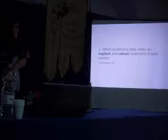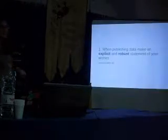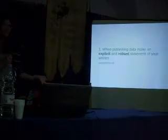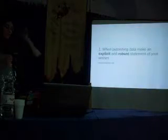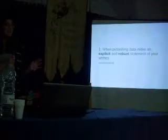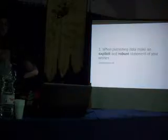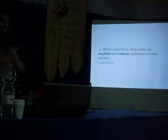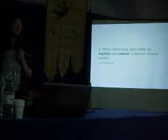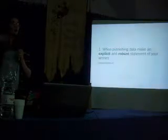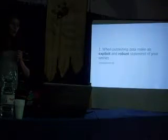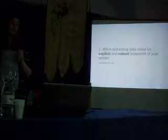Panton Principle number one: when publishing data, make explicit and robust statements of your wishes. Essentially, put something on the data that tells people what they can do with it, because so often that's not the case. Even in open access, some journal websites make it really hard to establish whether the article you're looking at is open access or not. Whether it's a single spreadsheet or a large dataset — biodiversity data, for instance — have something clear about what you want people to do with that data and what restrictions apply.